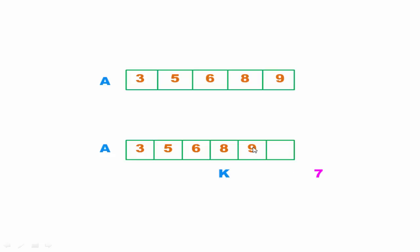For that we need to shift all the elements from k to upper bound one position right. Means shift 9 here, then 8 here. Now the kth position is empty and we can put 7 there.